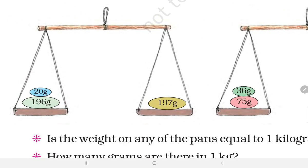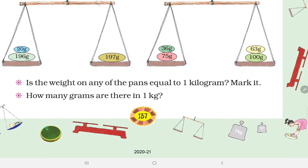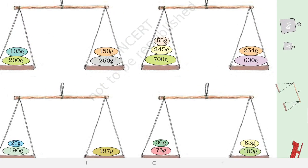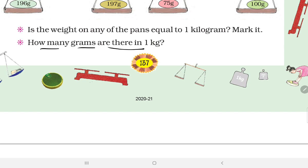196 and 20 equals 216, and 197, so 216 will be more, this pan goes down. 36 and 75 equals 111, and 163, so this pan goes down. Is the weight of any of the pans equal to 1 kg? Mark it. Yes, this is 1 kg. How many grams are there in 1 kg? Answer will be 1 kg equals 1000 grams. This question is important.